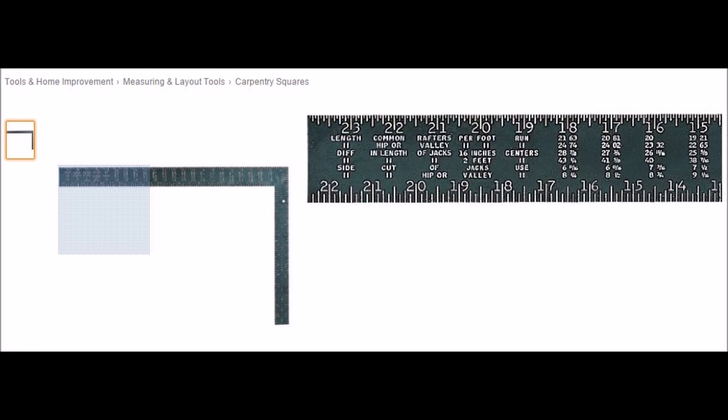Welcome to the second of a three-part video series on the framing square rafter tables. In this video we'll look at lines three and four that correspond to the difference in lengths of hip jack rafters.